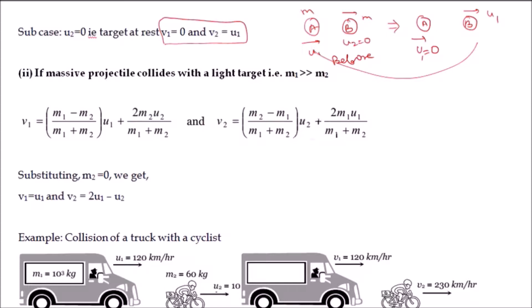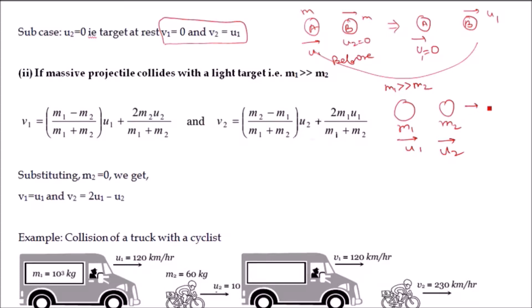If a massive projectile collides with a light target, that is m1 is much much greater than m2, we draw the figure with m1 and m2 where m1 >> m2. m1 moves with velocity u1 and m2 moves with velocity u2. In this case we consider m2 approximately equal to zero in comparison to m1. After collision, m1 moves with velocity v1 and m2 moves with velocity v2.